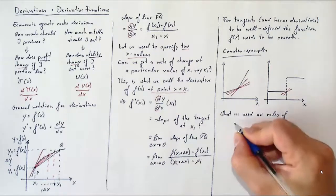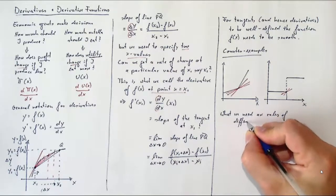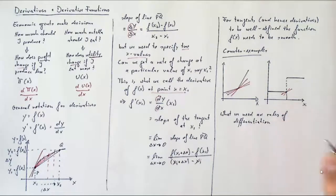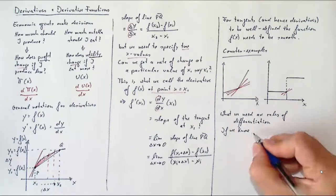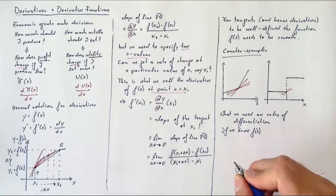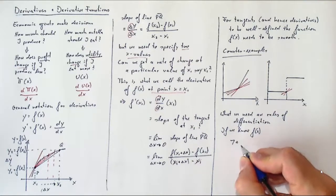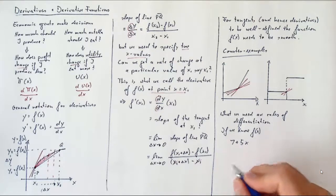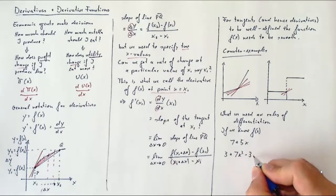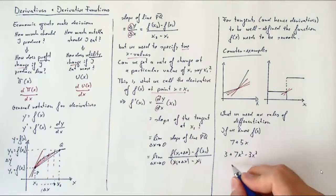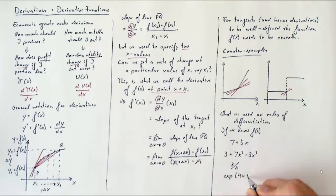So what we need from now on is what we call the rules of differentiation. We will have mathematical expressions for a function, and we can't always work graphically. Sometimes we'll just have very complicated functions or higher-dimensional functions. What we will want from now on is that if we know the function—for instance, 7 + 5x, or 3 + 7x² - 3x³, or 3/x, or special functions like the exponential of 4x + 1.